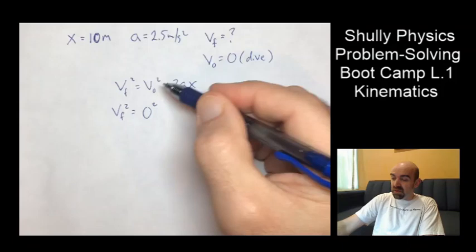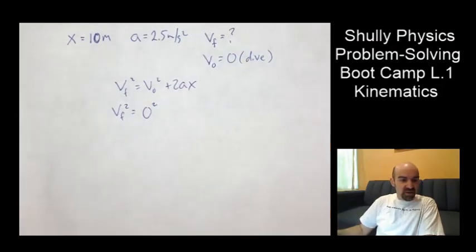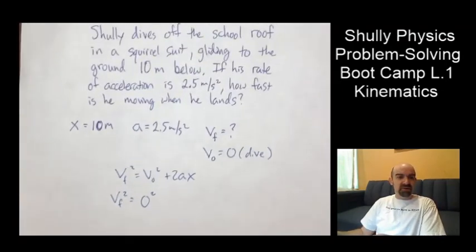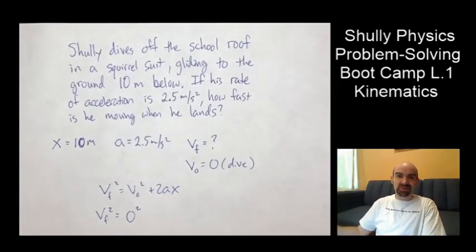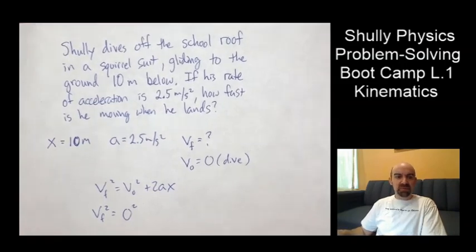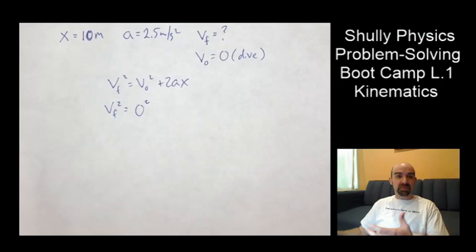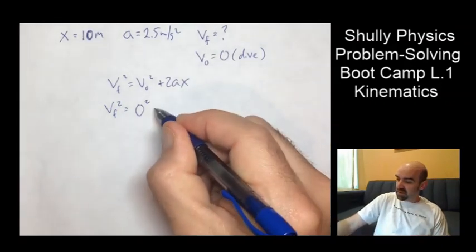If you didn't get that initial velocity to start with, at this point you'd be going, whoa, all these equations, they've got a V0. What do I do? I don't know what the initial velocity is. So you go back to the text and you go, oh, he dives off. So the initial velocity is zero. So if you had missed that the first time, it's not a problem. You just keep going. If you get stuck, don't stop. Just keep going.